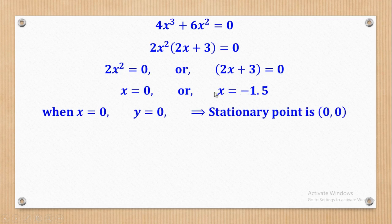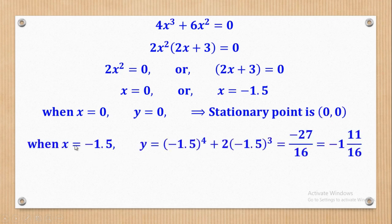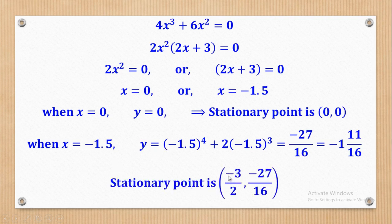Now finding the corresponding y values: when x = 0, y = 0, so one stationary point is (0, 0). When x = −1.5, substituting into the expression for y gives y = −27/16, so the other stationary point is (−3/2, −27/16).